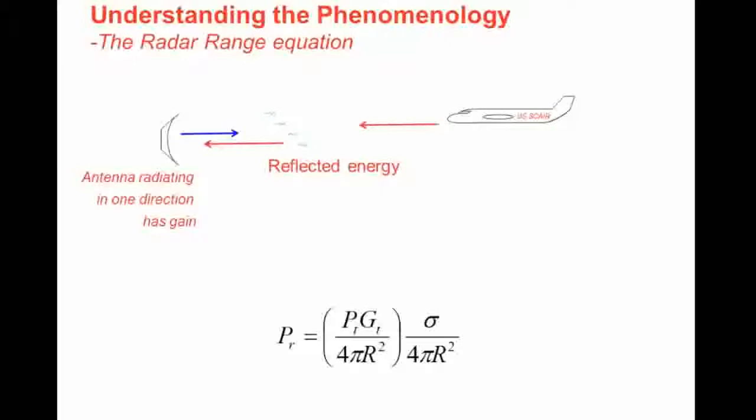The environment is captured, or the power of the reflected return is captured, with what's known as the radar range equation. It looks a little scary, but let's break it down. What we're interested in is the reflected power from a pulse that was broadcasted. That reflected power is going to be a function of the power that was transmitted.